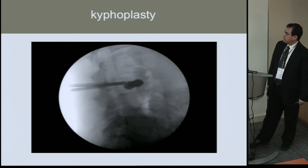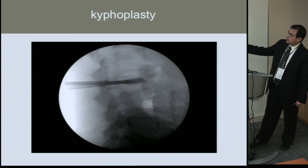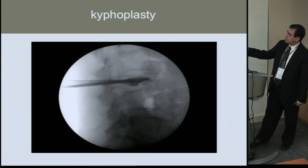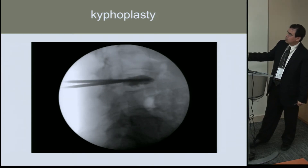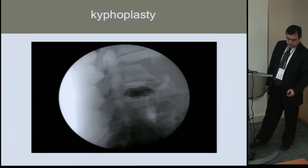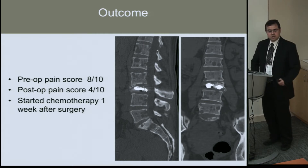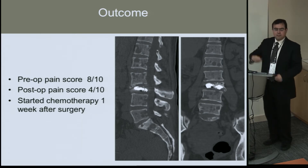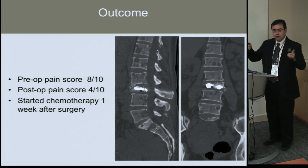We always watch for extravasation of cement posteriorly, but anterior extravasation can also occur. As we inject cement, the cavity gets filled and we are improving the axial load-bearing capacity of the spine. Her pain significantly decreased, and she started chemotherapy one week after we saw her. Cement augmentation is a very good alternative for patients with failure of the anterior column, especially when your window of opportunity is narrow.